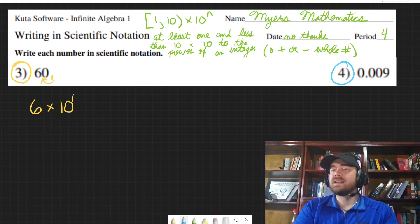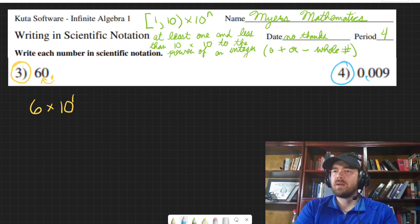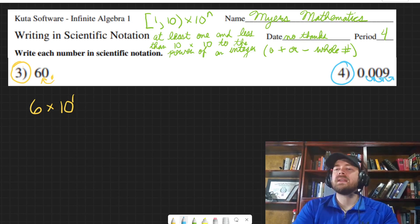So I'm going to need ten to the negative power. That's going to be one, two, three spaces to make it nine. That would put the decimal point right over here, right after the nine.